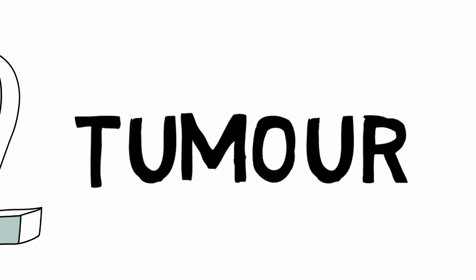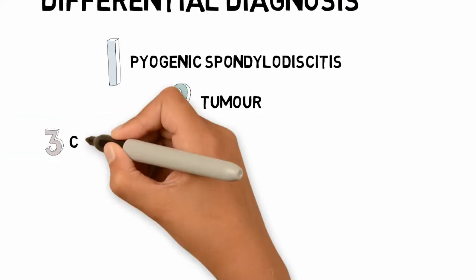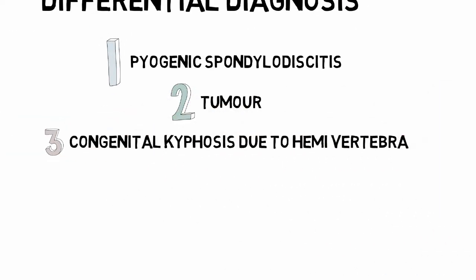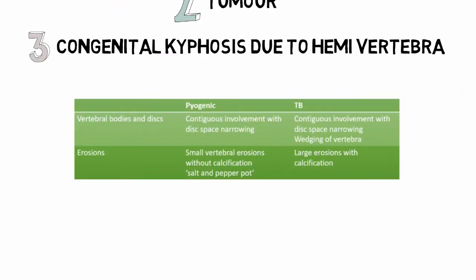To differentiate between TB Spine and pyogenic spondylodiscitis, it is important to look at the vertebral bodies and discs, as well as erosions.